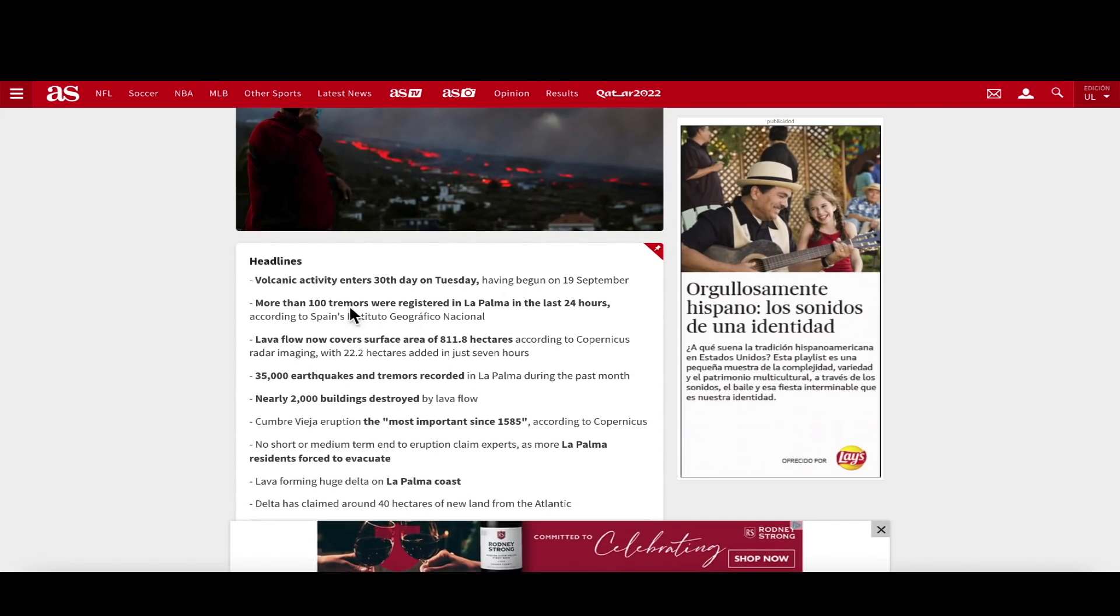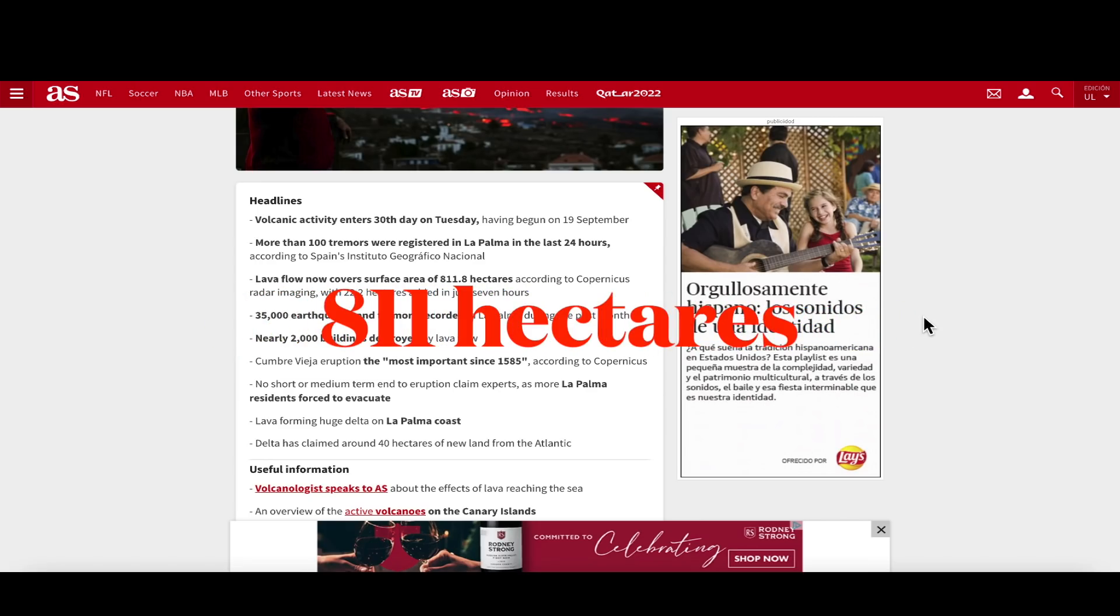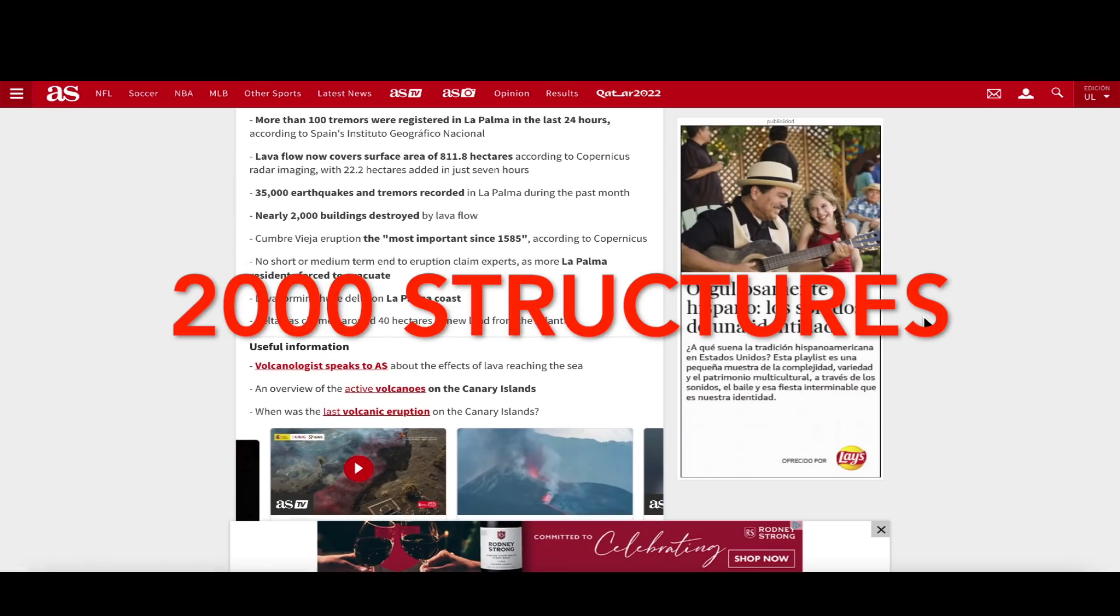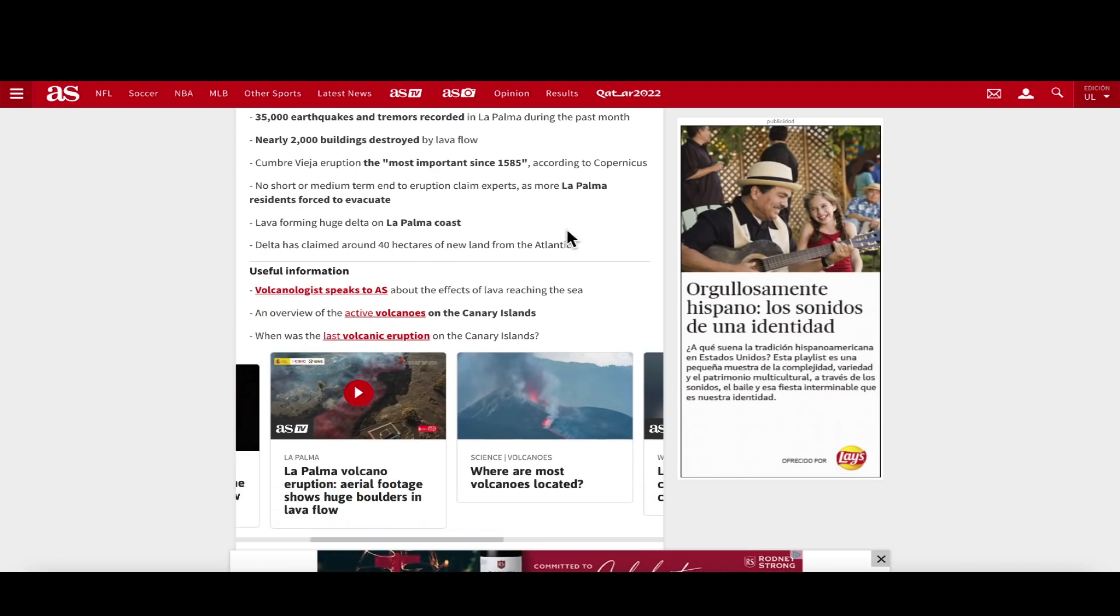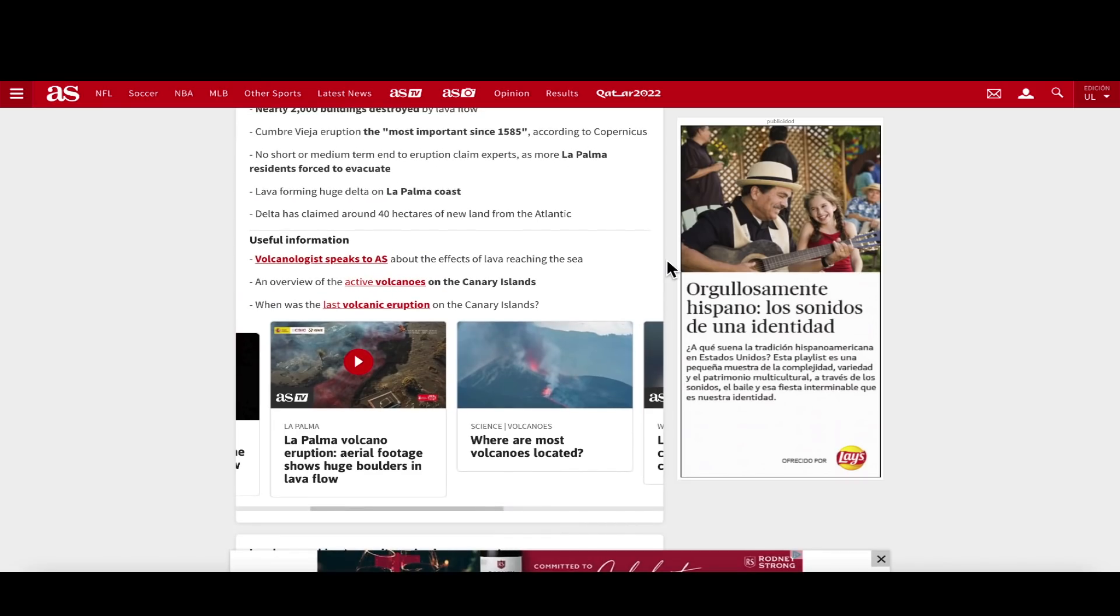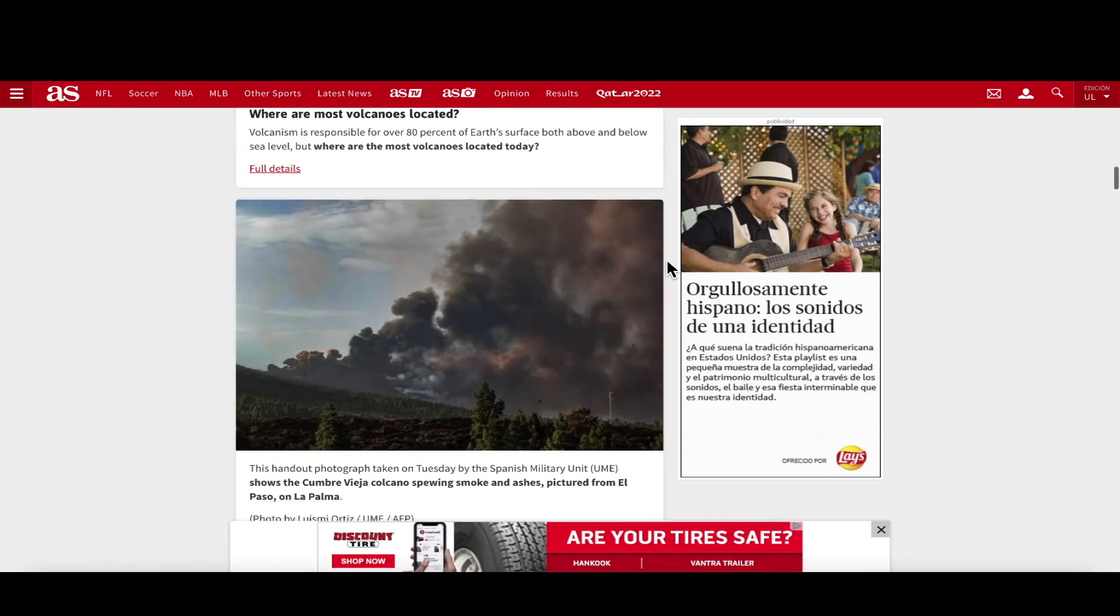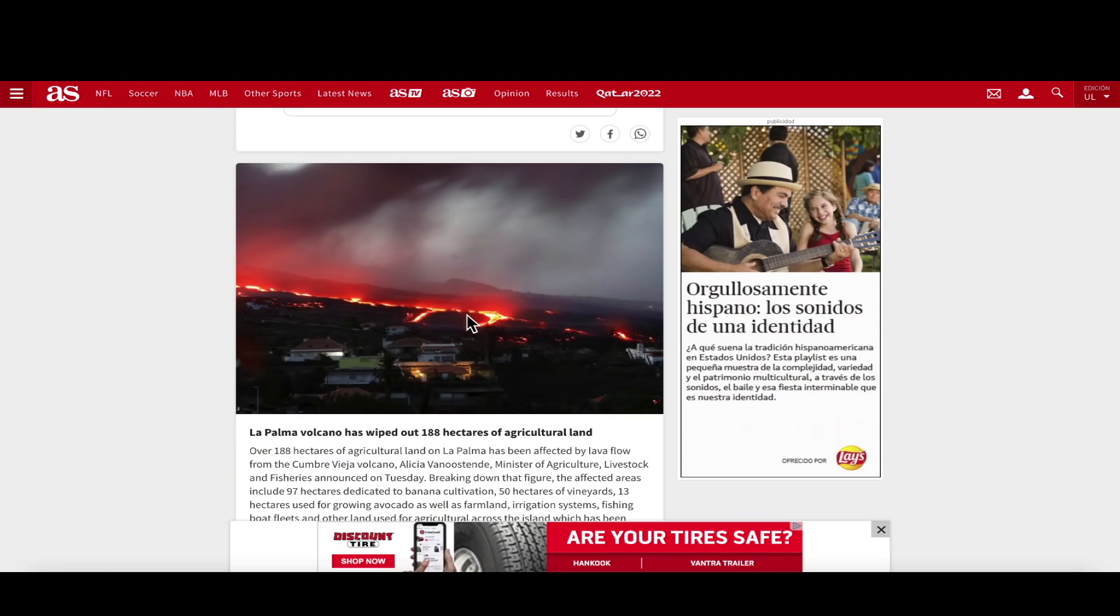Here's the headlines from La Palma October 19th of 2021. Volcanic activity enters its 30th day. It began September 19th of 2021. More than 100 earthquakes in the last 24 hours. Lava flow now covers a surface area of 811 hectares. 35,000 earthquakes and tremors have been recorded in the last 30 days. Nearly 2,000 buildings have been consumed by lava flow. This is the most significant eruption since 1585. According to Copernicus, lava forming a huge delta on La Palma west coast. A delta has formed and it's claimed 40 hectares of new land from the Atlantic Ocean. You can see new photos of smoke and ash in the sky, more photos of bright orange lava. It almost looks like you're looking at a portion of the sun when you look at these large lava flows flowing across the island.